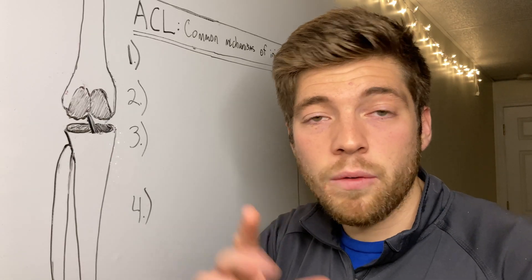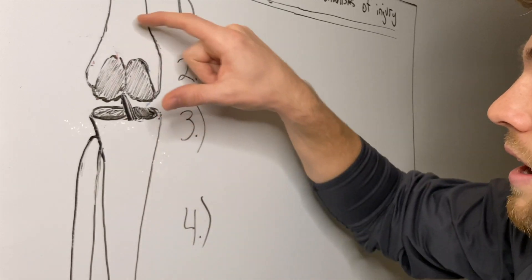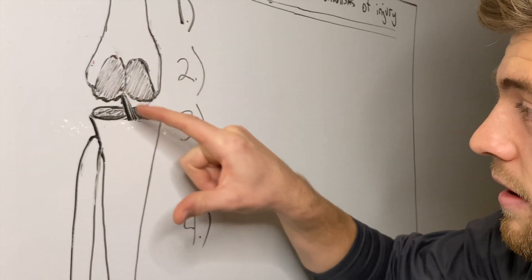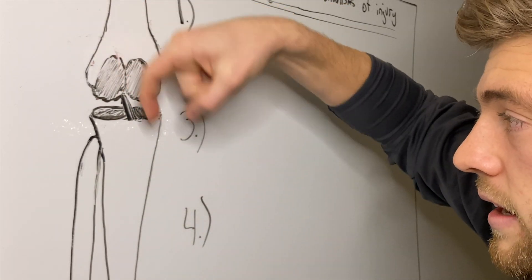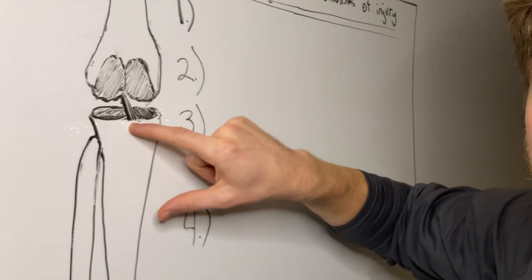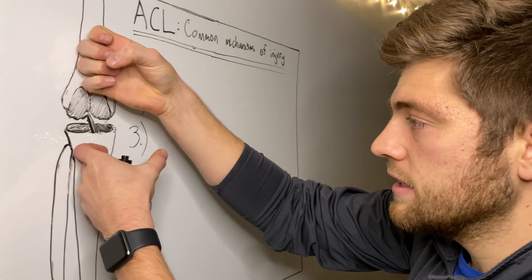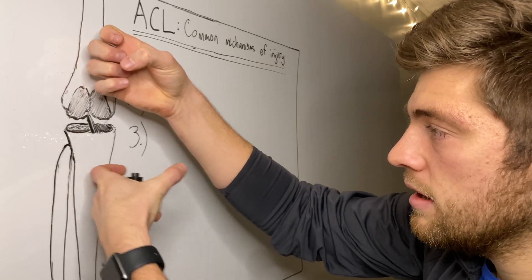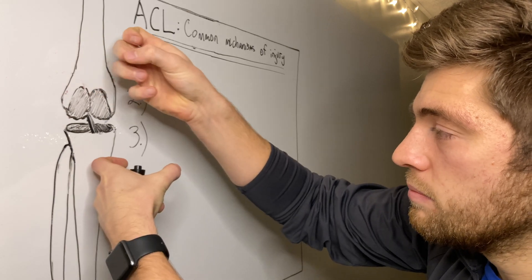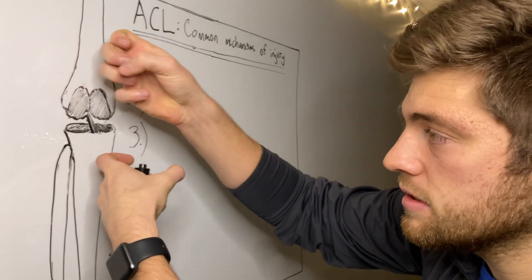Okay, first things first, let's talk about what the ACL does. So it starts off in the backside of the femur right here, and then comes forward and attaches to the front part of this tibia. Pretty much it's going to get taut when you pull the tibia forward, or if you push the femur backwards, it's going to get taut.